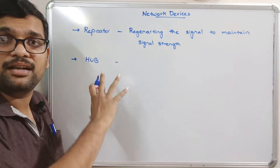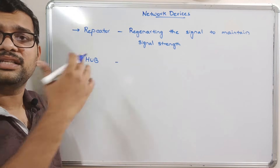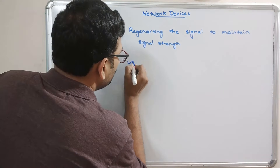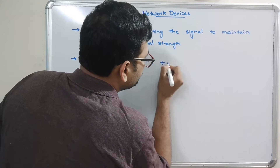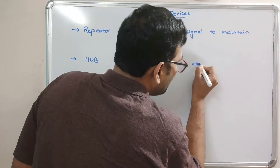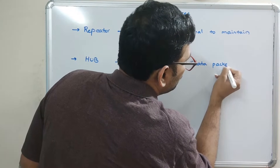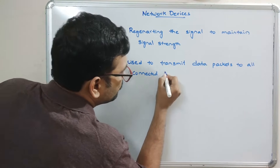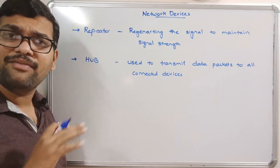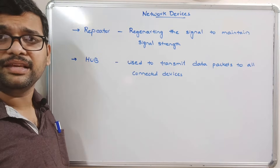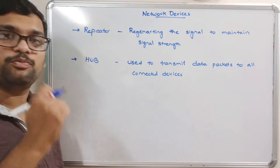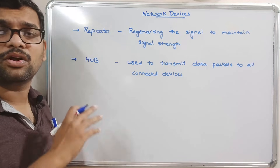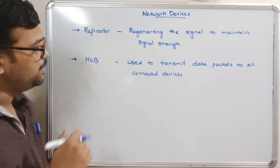Different devices are connected to a central unit called the hub. Whatever data is received by the hub, it transfers the packets to all connected devices. It doesn't have any filtering option — it doesn't verify anything. There is no routing, no path selection, and no filtering options in the hub.